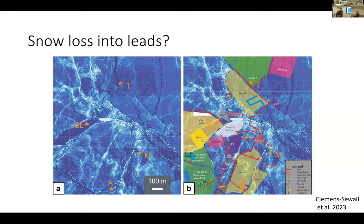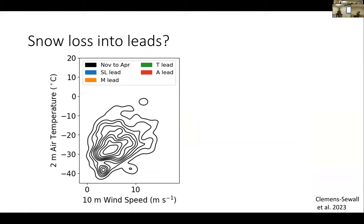We could access the leads and take ice cores, using stable water isotopes to determine how much snow mass was actually incorporated into the lead ice. We picked these leads in part because we knew the meteorological conditions at the time of formation, so we could relate our findings to other processes and inform model understanding. On the left I'm showing a contour map of 10-meter wind speed on the X axis and 2-meter air temperature on the Y axis for the entire winter period, November to April, at Mosaic. Wind speeds were typically between about 2 and 10 meters per second, and air temperatures typically between negative 35 and negative 15 degrees.